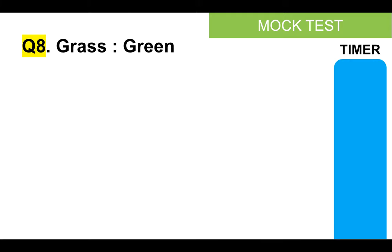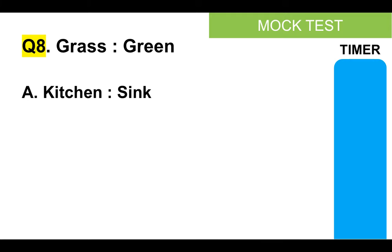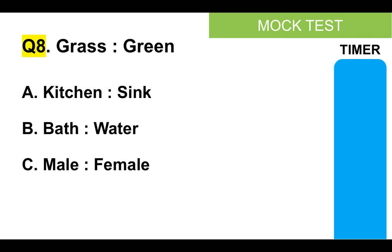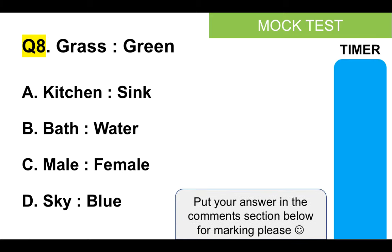Question number eight: grass and green. Is it A, kitchen and sink; B, bath and water; C, male and female; or D, sky and blue? What's the relationship? Please put your answer in the comments section below for marking. Here's your timer.